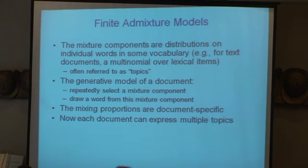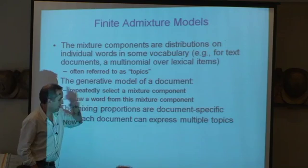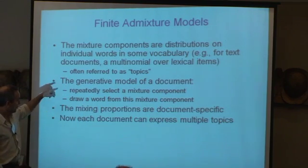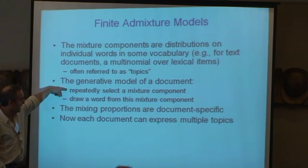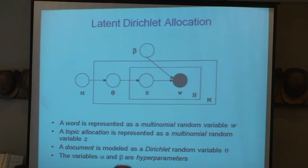Along came something called admixture models. In this case, in a given document, you can have multiple topics. The first thing you do when you generate a document is you select one of the topics — the mixture components — and then you draw one word from that mixture component, and then you do that again, so you can get multiple topics appearing inside of a single document. Very simple idea — this is called admixture models. This is one of the things that I got involved in at Berkeley, and my group did something called Latent Dirichlet Allocation.